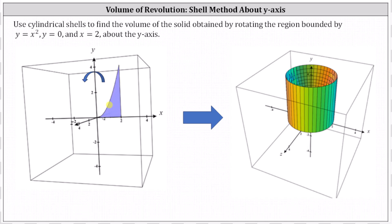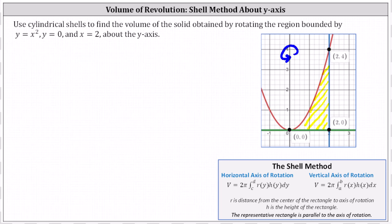Whenever using the shell method to determine the volume of revolution, we want to sketch a representative rectangle that represents one shell or one tube of the volume. When using the shell method, the representative rectangle will always be parallel to the axis of rotation. When using the disk or washer method, the representative rectangle will be perpendicular to the axis of rotation. Because we have a vertical axis of rotation, we will have a vertical representative rectangle.